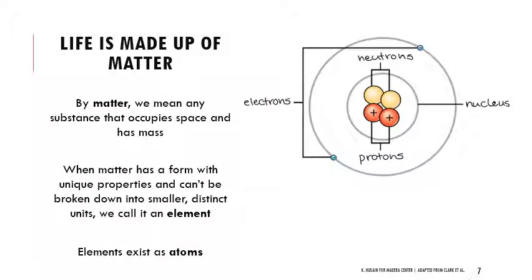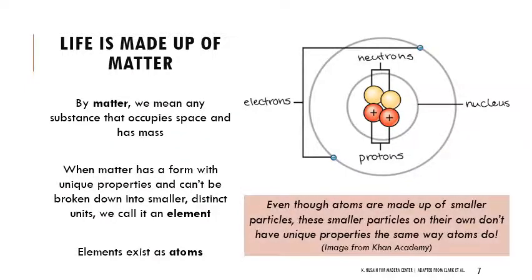Sometimes an atom can't exist on its own — it has to exist with another atom. So some elements exist on their own, others exist as molecules. Either way, the atom is the simplest unit. Atoms are made up of smaller particles like neutrons, protons, and electrons, but it's the assembly of those smaller units that forms an element — an atom — that has unique properties. One proton or one electron on its own is important biochemically, but doesn't have unique properties the same way an element does.